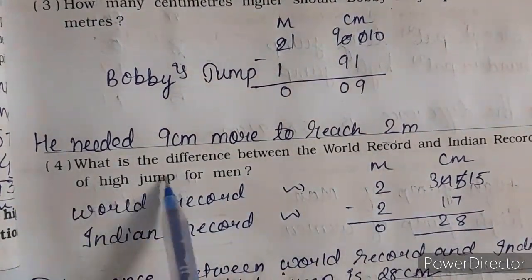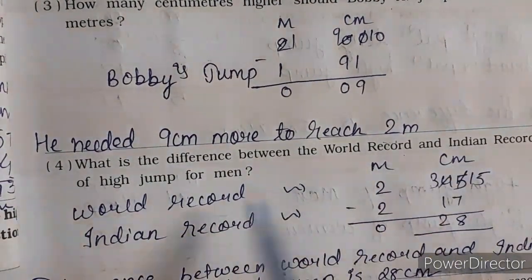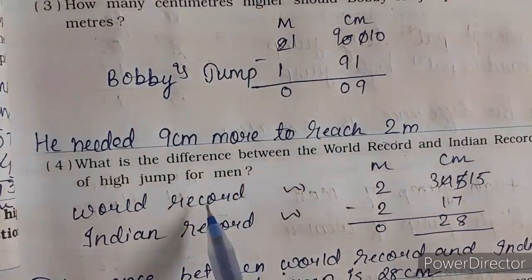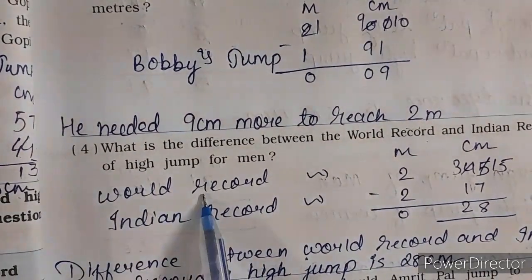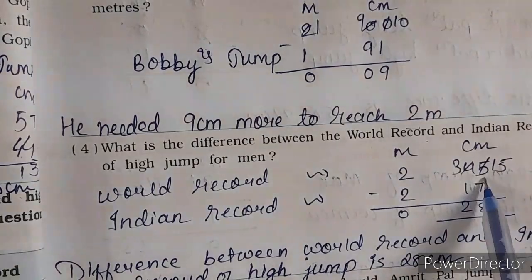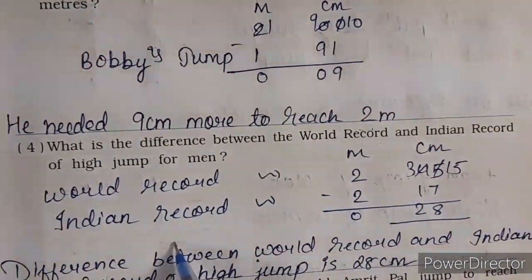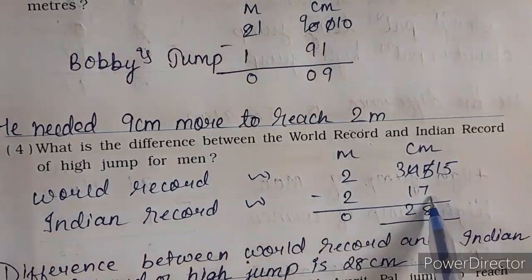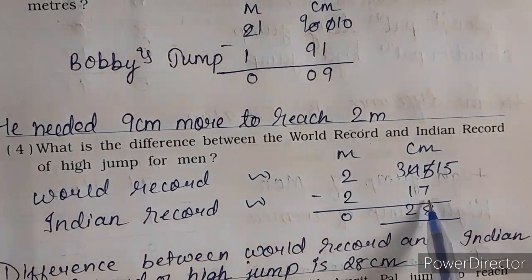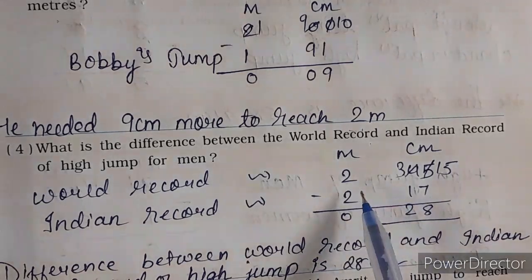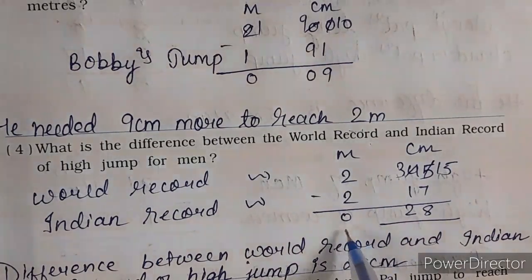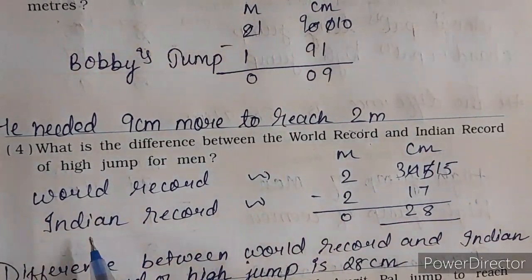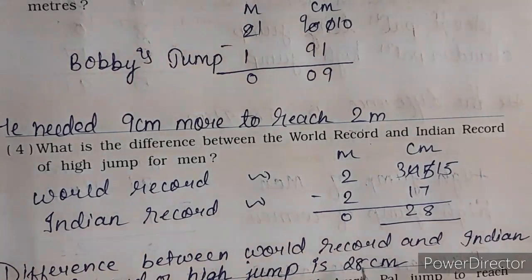Next question — what is the difference between the world record and the Indian record of high jump for man? Ab yahan pe sirf man ka dekhna hai. Man ka world record kitna hai — 2 meter 45 centimeter. And Indian record kitna hai man mein high jump mein — 2 meter 17 centimeter. Minus karenge — 45 minus 17 equals 28, and 2 minus 2 zero. Yani ki jo difference hai world record aur Indian record mein high jump mein — woh hai 28 centimeter.